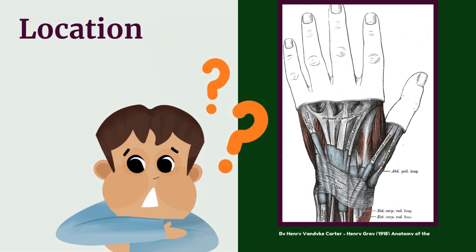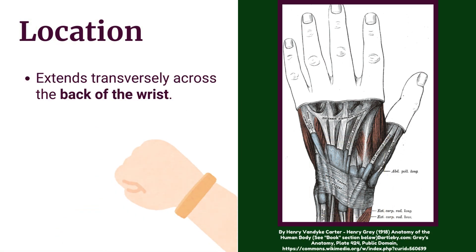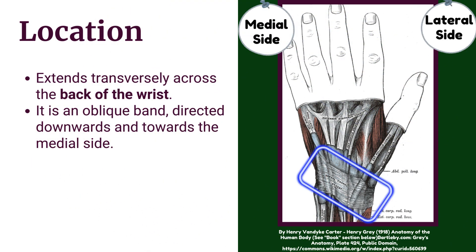Location of extensor retinaculum. It extends transversely across the back of the wrist. It is an oblique band directed downwards and towards the medial side.